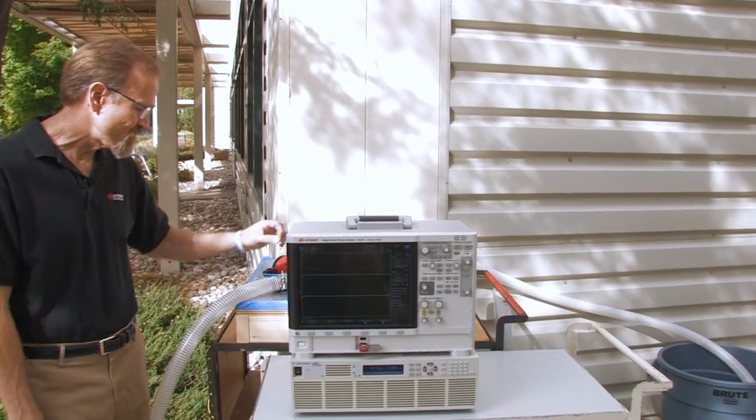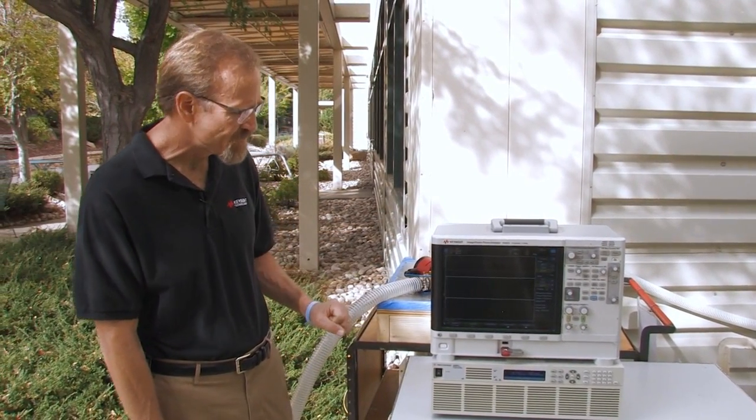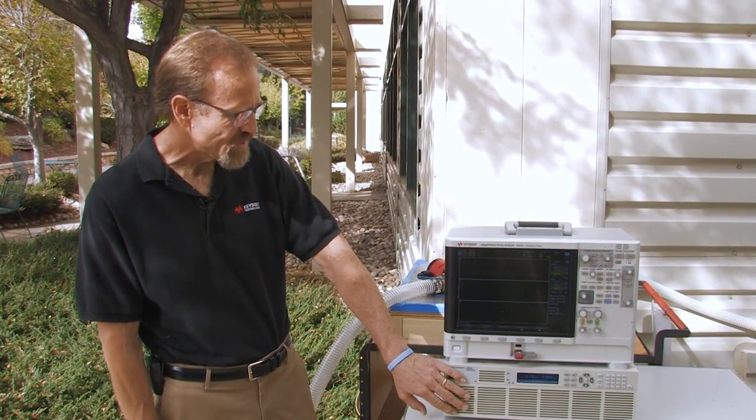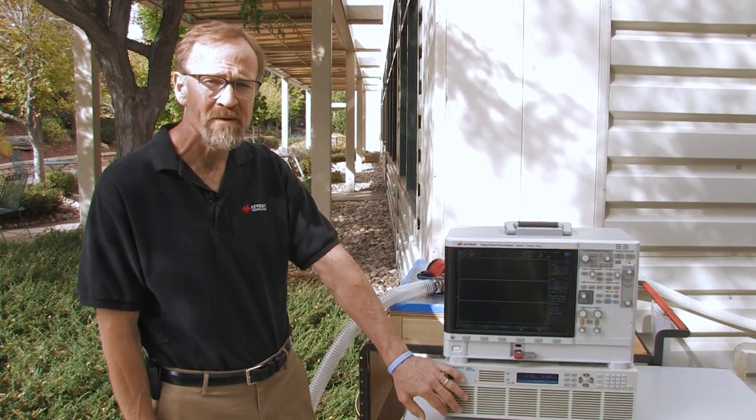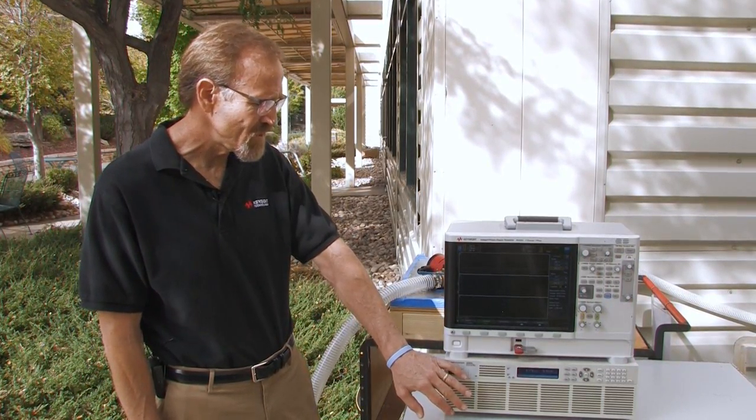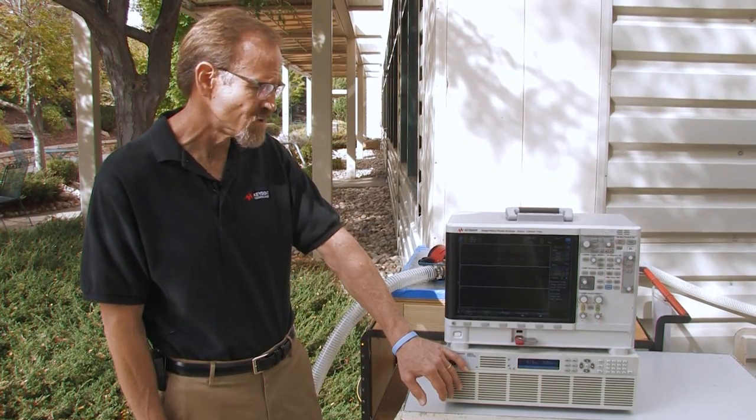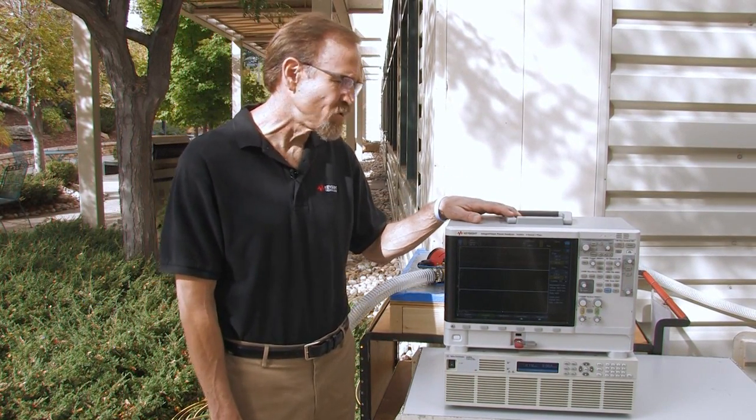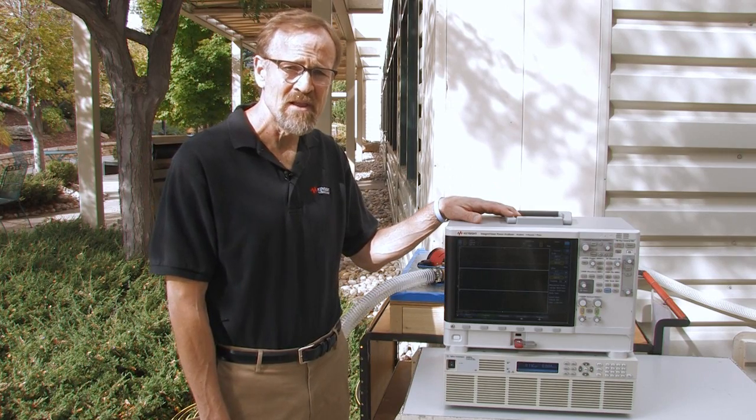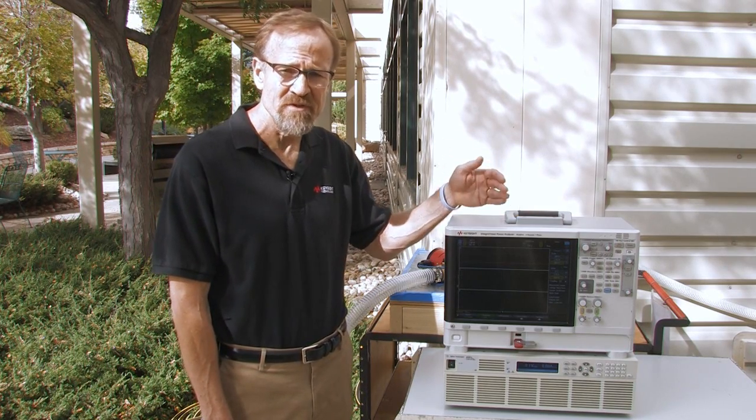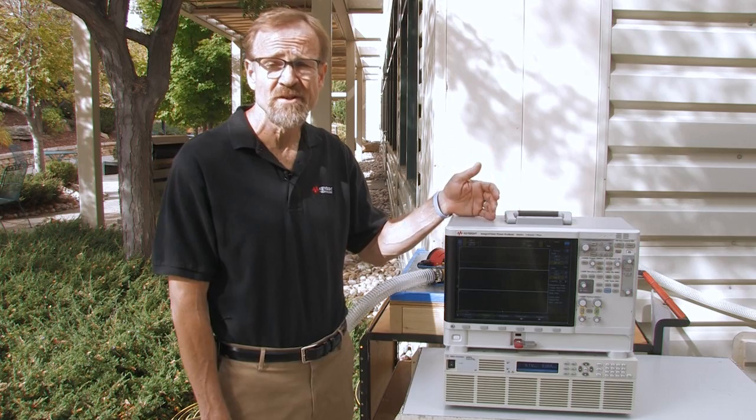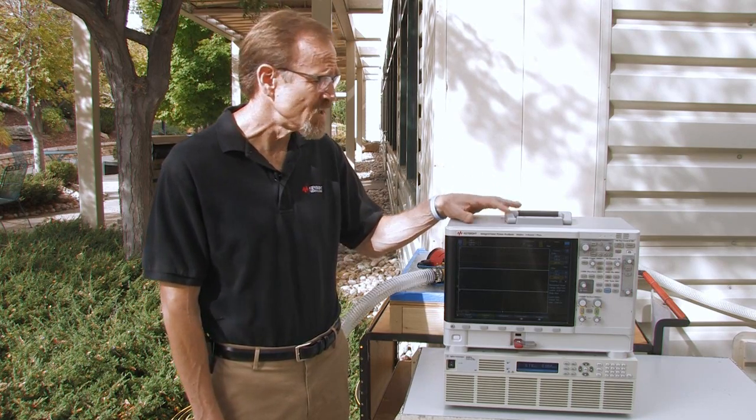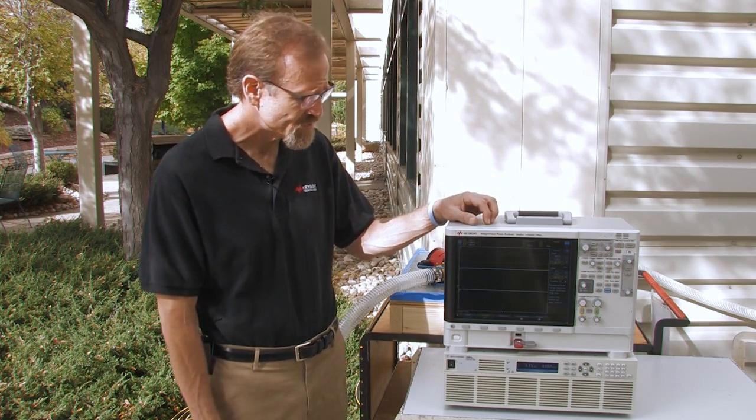The way we have the pump connected to our instrumentation is first we're using an AC power source to power up the pump. This is a European pump so we need 230 volts input, and then we have it directly connected to channel one of the IntegraVision power analyzer. Both the voltage and the direct connect to the current, we have a 50 amp range, and that's how we have it connected, so no transducers are necessary.